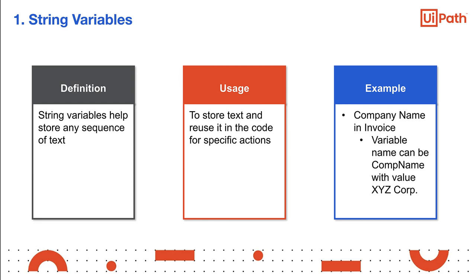String variables are used to store text and reuse it in the code for specific actions. It can be the name of a person, address of a person, and so on. In the example, consider an invoice that is being generated. There are various fields mentioned in the invoice. These fields are represented using different variables. Here, the name of the company is an example of a string variable, and it takes a string value.